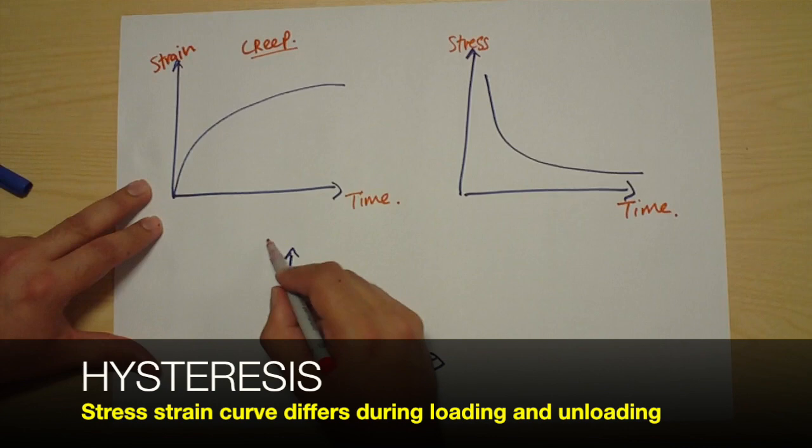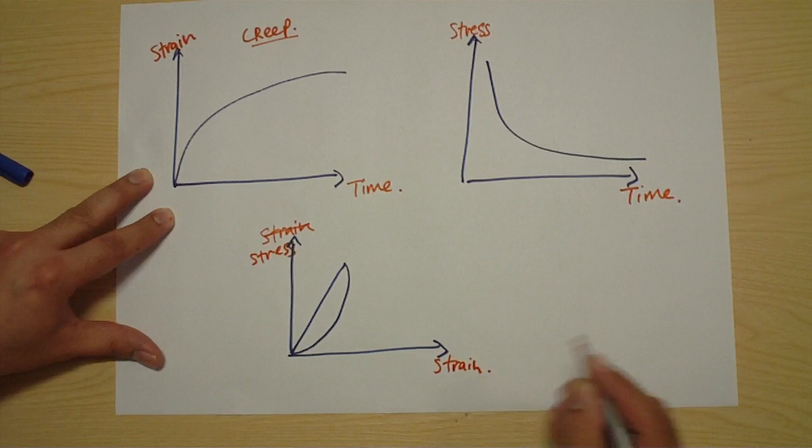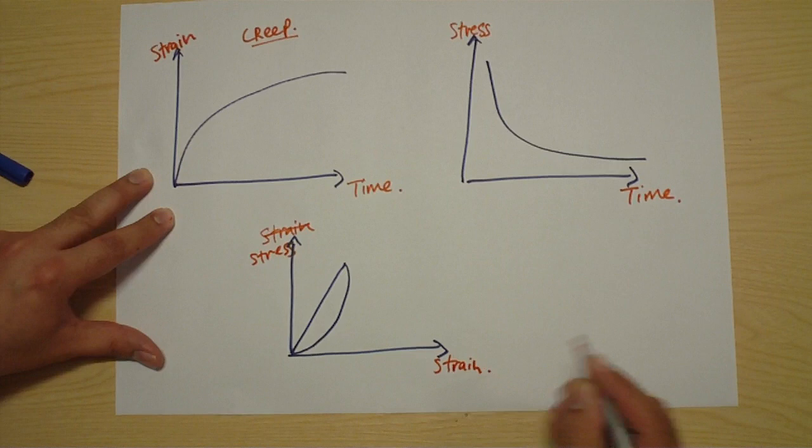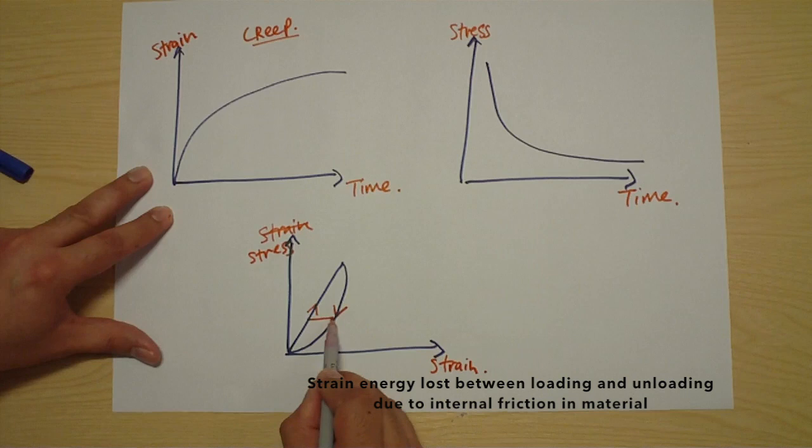The final property of a viscoelastic material is hysteresis. Here the stress-strain curve in the elastic portion with stress and strain—when the material is loaded and then unloaded, it follows a different path in the unloading cycle. And this difference represents a release of energy.